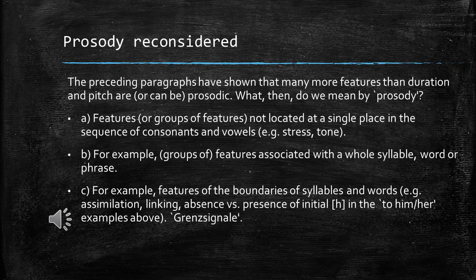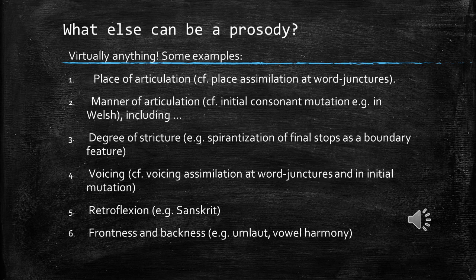B: For example, groups of features associated with a vowel, syllable, word, or phrase. C: For example, features of the boundaries of syllables and words — like assimilation, linking, or the absence versus presence of initial 'h' in 'to him or her.'